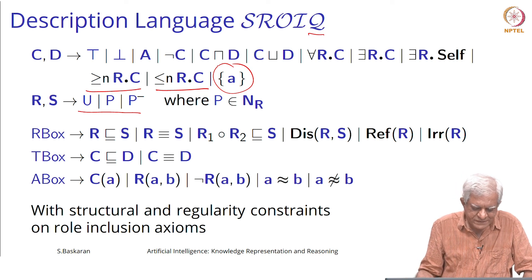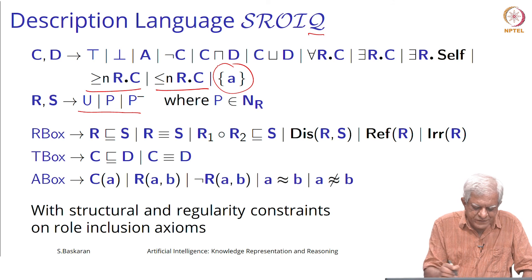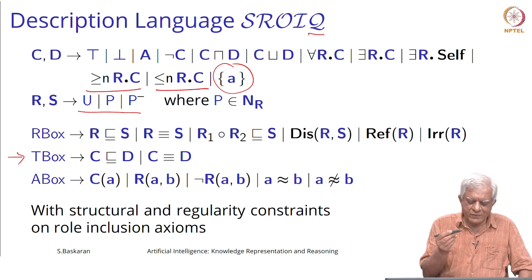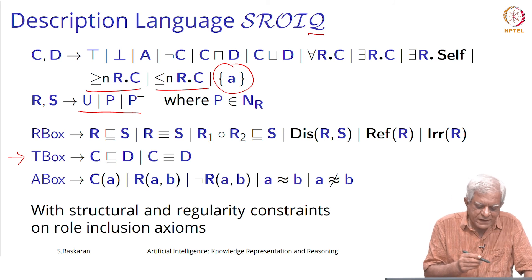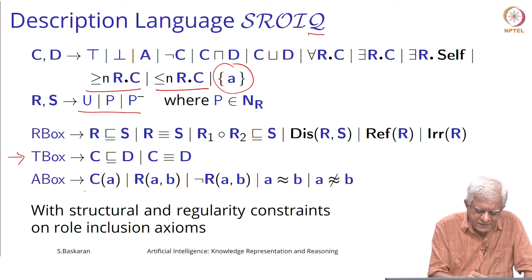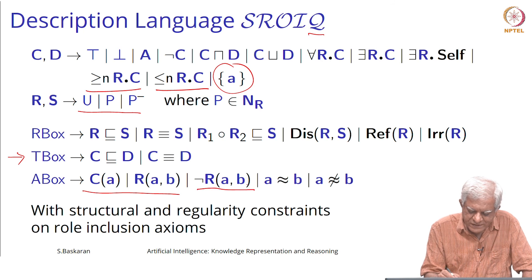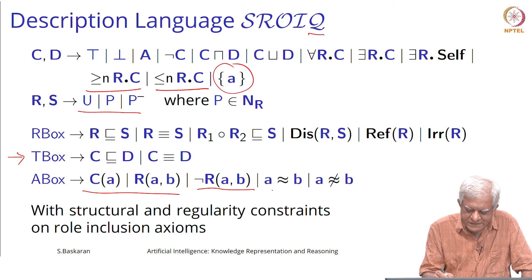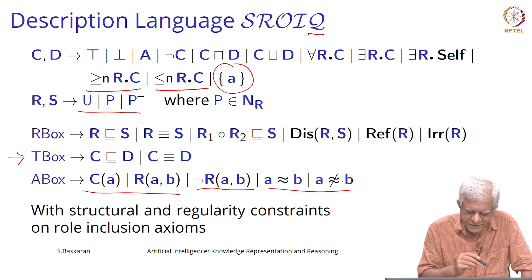The T-box is still the same, basically we talk of subsumption and equivalence. In the A-box we can, as before, say this, but we can also say this, that it does not belong to the relation AB. This we saw earlier also.